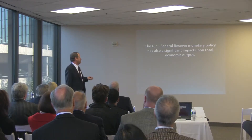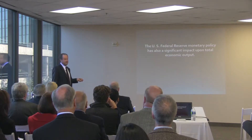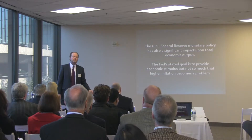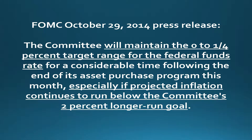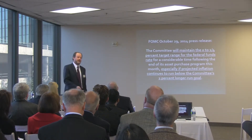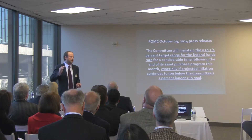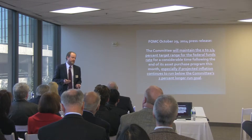The Federal Reserve has a significant impact on our economy. Their goal is to provide stimulus but not so much that inflation becomes a problem — it's a balancing act. The Federal Open Market Committee has publicly stated they intend to maintain a federal funds rate target between zero and one-quarter of one percent for the foreseeable future, especially if inflation remains below their two-percent target range. They're basically saying: I'm going to keep the pedal on the metal, but don't expect inflation or interest rates to go high in the near term.